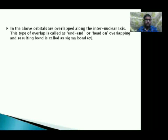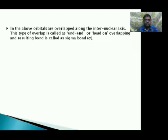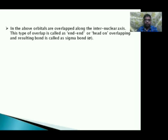In the above example, the orbitals are overlapped along the internuclear axis. This type of overlapping is called end-to-end or head-on overlapping. The bond that results from this end-to-end or head-on overlapping is called a sigma bond.